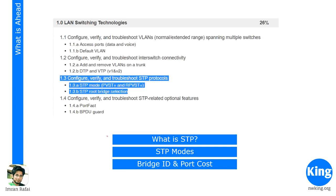Today we are following the ICND exam topics as per Cisco's website, specifically topic 1.3: configure, verify, and troubleshoot STP protocols. 1.3 covers STP modes — PVST plus and RPVST plus — and STP root bridge selection. Because the topic is quite big, I'm going to take up root bridge selection in the next video, Day 37.